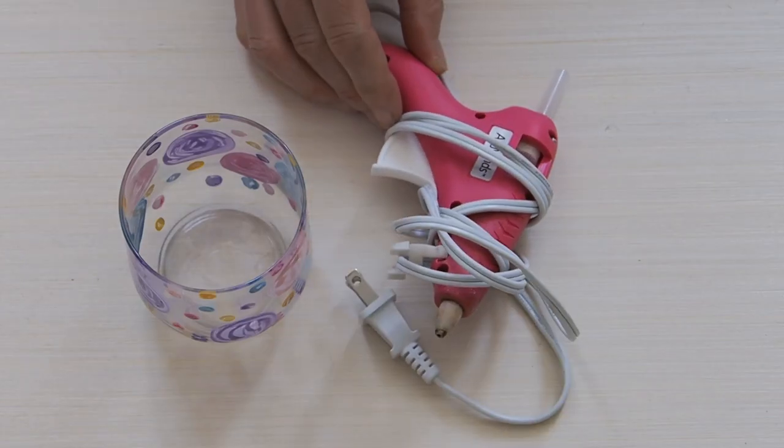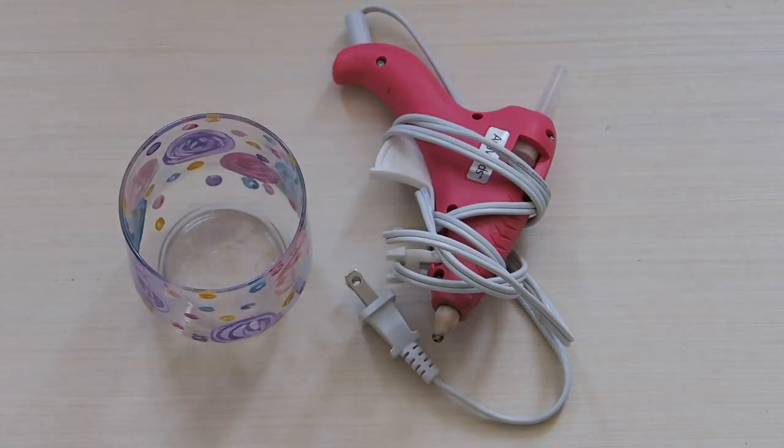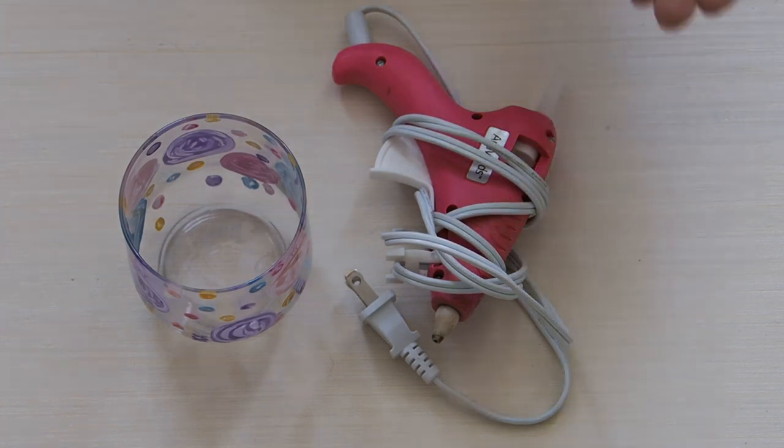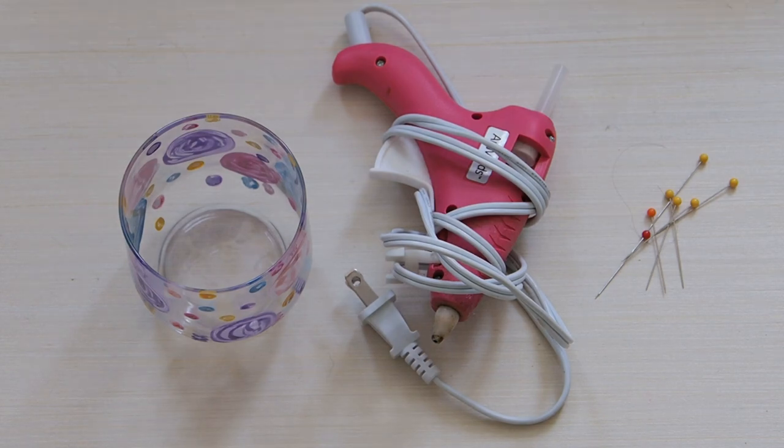You'll also need a glue gun for gluing on some of the embellishments and you can use the glue gun for gluing the sides of your pouch and not need to do any sewing. And you might also want to use some pins to pin your felt in place when you're doing the stitching.